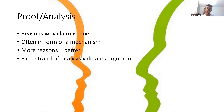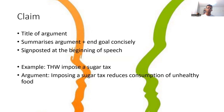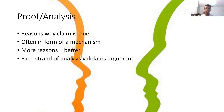Moving on to proof and analysis — this is when you're explaining why your argument is true. It often comes in the form of a mechanism, which is a debating term for a singular piece of analysis: a logical link which connects the motion to the argument you're trying to make, because usually they're not so obvious or intuitive that you can just state your argument and the judge will just believe it. In the case of the sugar tax, the motion is only talking about a sugar tax, and to jump straight to people eating less unhealthy food is quite a big jump. There are a lot of logical links in between those two points which you need to thoroughly explain. The more pieces of analysis that you have, the better your argument is going to be.